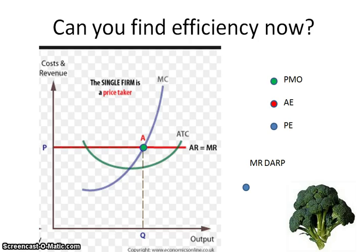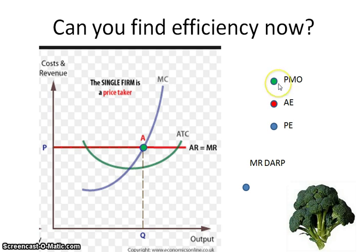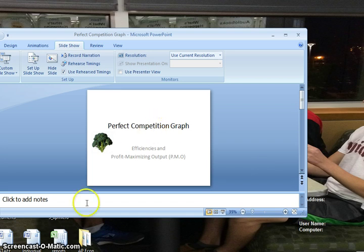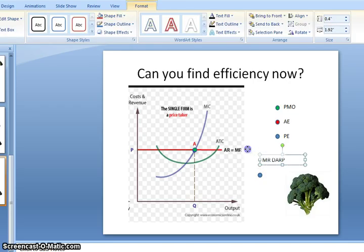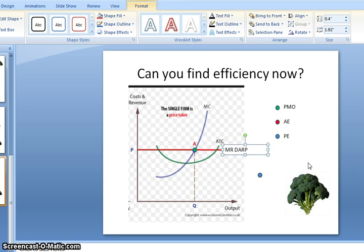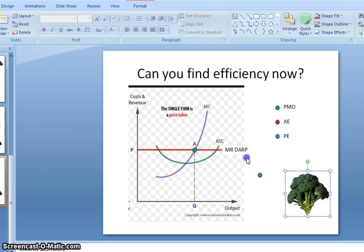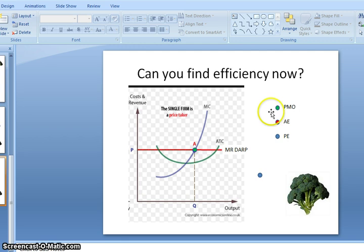Now let's look at a graph where we don't have them all intersecting at the same point, so we can see exactly what is going on. For profit maximizing output, we're looking at where MR equals MC. This graph is not properly labeled, so the first thing I would do is move MR=D=AR=P right along where that price curve is, because marginal revenue equals demand equals average revenue. The formula for profit maximizing output is where MR equals MC.